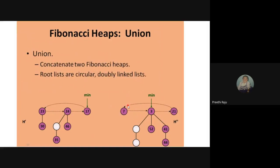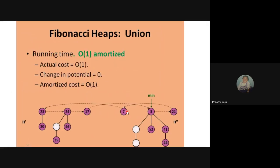Union is also a very simple process. Since Fibonacci heaps follow a circular doubly linked list, we simply connect the two lists — connecting 17 and 7 — this is called the union process. Since it is a doubly linked list and circular, we can directly connect the elements. The cost is always O(1), meaning no extra processing is needed. You simply merge H1 and H2 together.